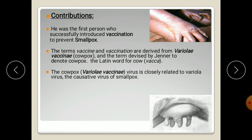The cowpox virus and the smallpox virus are closely related to each other, but the cowpox virus is relatively harmless to humans while the smallpox virus is harmful to humans.